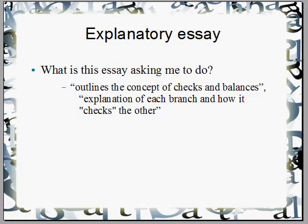This is an explanatory essay. The first thing you should always do when writing an essay is ask yourself, what is this essay asking me to do? These are direct quotes from the assignment. It says: outline the concept of checks and balances, and explain how each branch checks the other. So we need to explain each branch, explain how they're checking and balancing the other, and explain the whole concept of checks and balances.